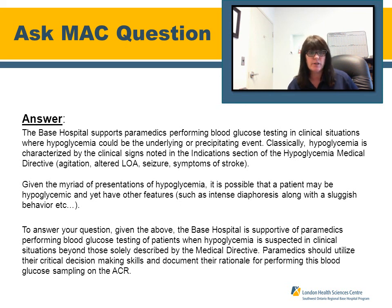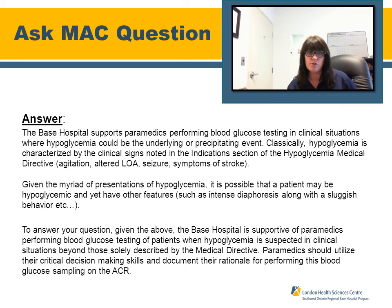Classically, hypoglycemia is characterized by the clinical signs noted in the indications section of the hypoglycemic medical directive, such as agitation, altered LOA, seizure, and symptoms of stroke. Given the myriad of presentations of hypoglycemia, it is possible that a patient may be hypoglycemic and yet have other features such as intense diaphoresis along with sluggish behavior. The base hospital is supportive of paramedics performing blood glucose testing of patients where hypoglycemia is suspected in clinical situations beyond those solely described by the medical directive. Paramedics should utilize their critical decision-making skills and document their rationale for performing this blood glucose sampling on their ACR.